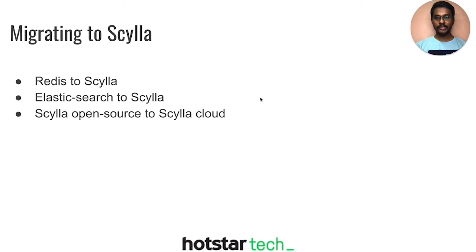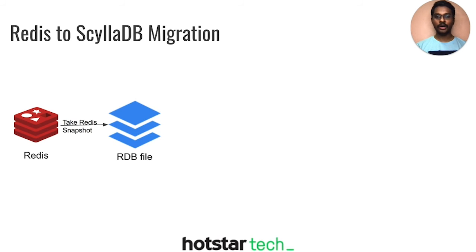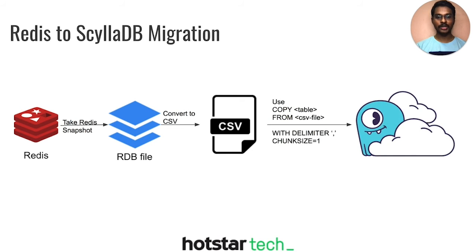Let's talk about migration to Scylla. We'll cover three kinds of migration: Redis to Scylla, Elasticsearch to Scylla, and Scylla Open Source to Scylla Cloud. Redis to Scylla migration is straightforward because our data models are almost similar. From Redis, we took a snapshot of the RDB file and used an RDB-to-CSV converter to produce a CSV file. We then used Scylla's copy command to copy from the CSV file to Scylla Cloud. One important thing to note is the parallelism — the number of threads you use to copy from CSV to Scylla Cloud.